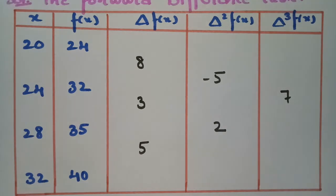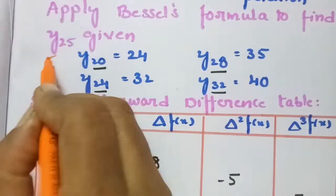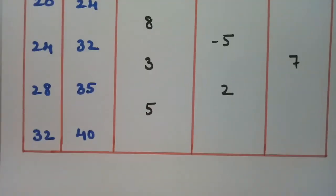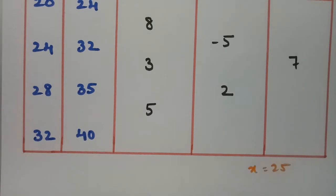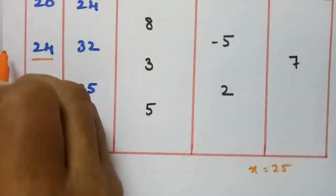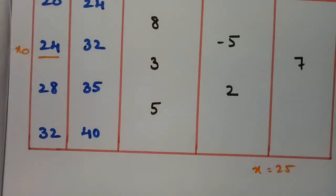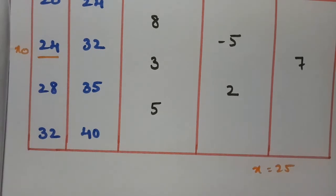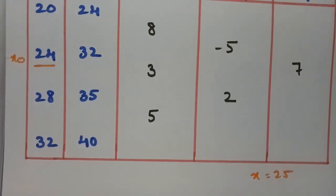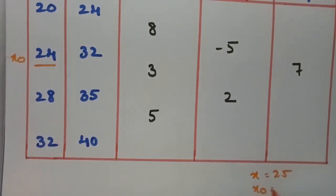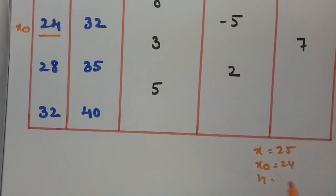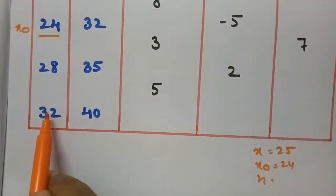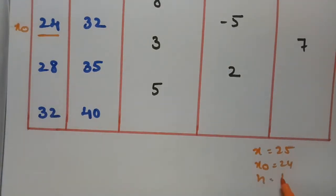We need y at x=25. The nearest tabulated value to 25 is 24, so we take x₀=24. The step size h is the difference between consecutive x values: 32 minus 28 equals 4, so h=4.